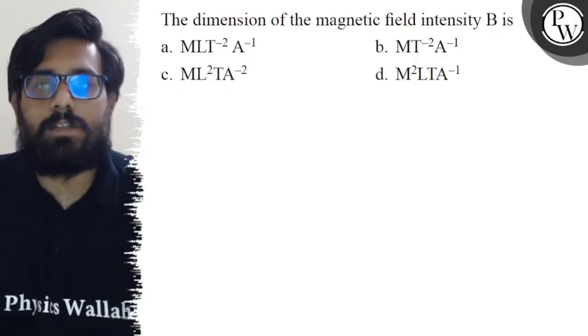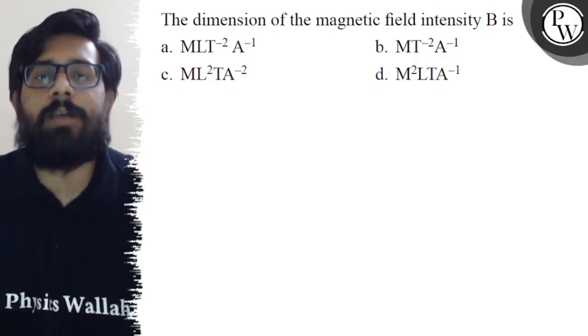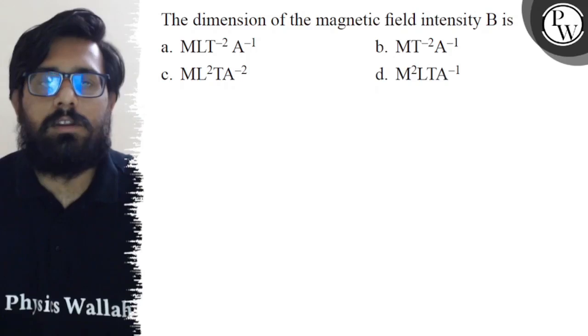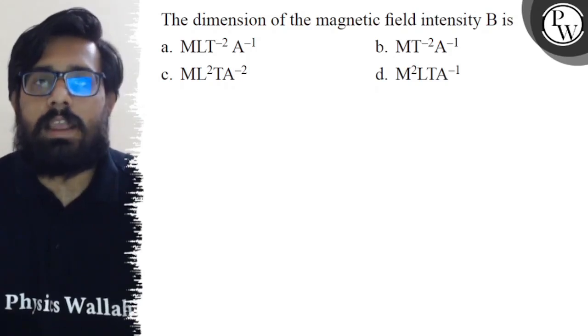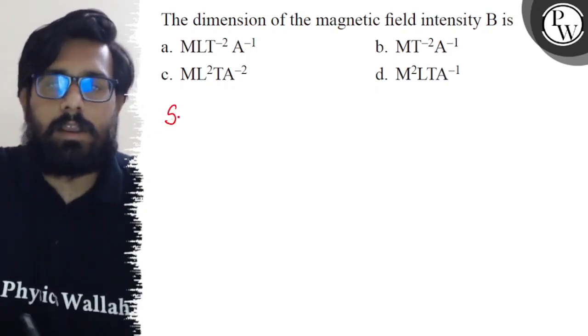Hello, so let's see the question. The dimension of the magnetic field intensity B is: option A is ML^-2 A^-1, option B is MT^-2 A^-1, option C is ML^2 TA^-2, and option D is M^2 LTA^-1.